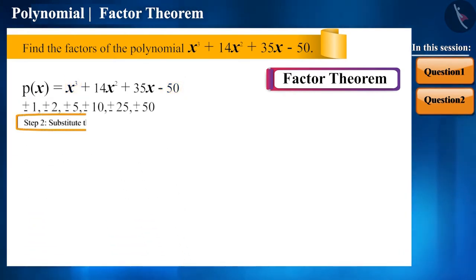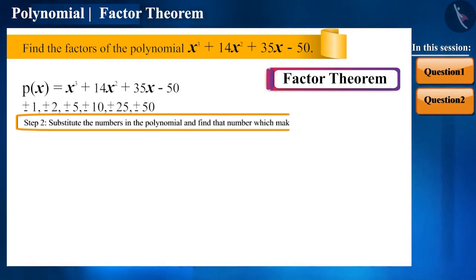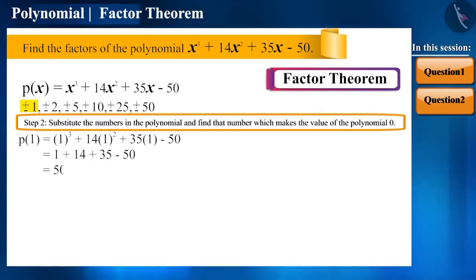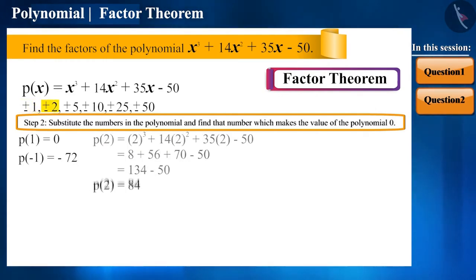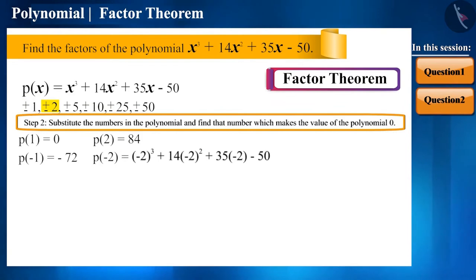And now, we come to the second step. One by one, we will substitute these numbers along with their signs in the polynomial and observe which number can make the value of the polynomial 0. So, p of 1 becomes 0, p of minus 1 becomes minus 72, p of 2 becomes 84, p of minus 2 equals minus 72.